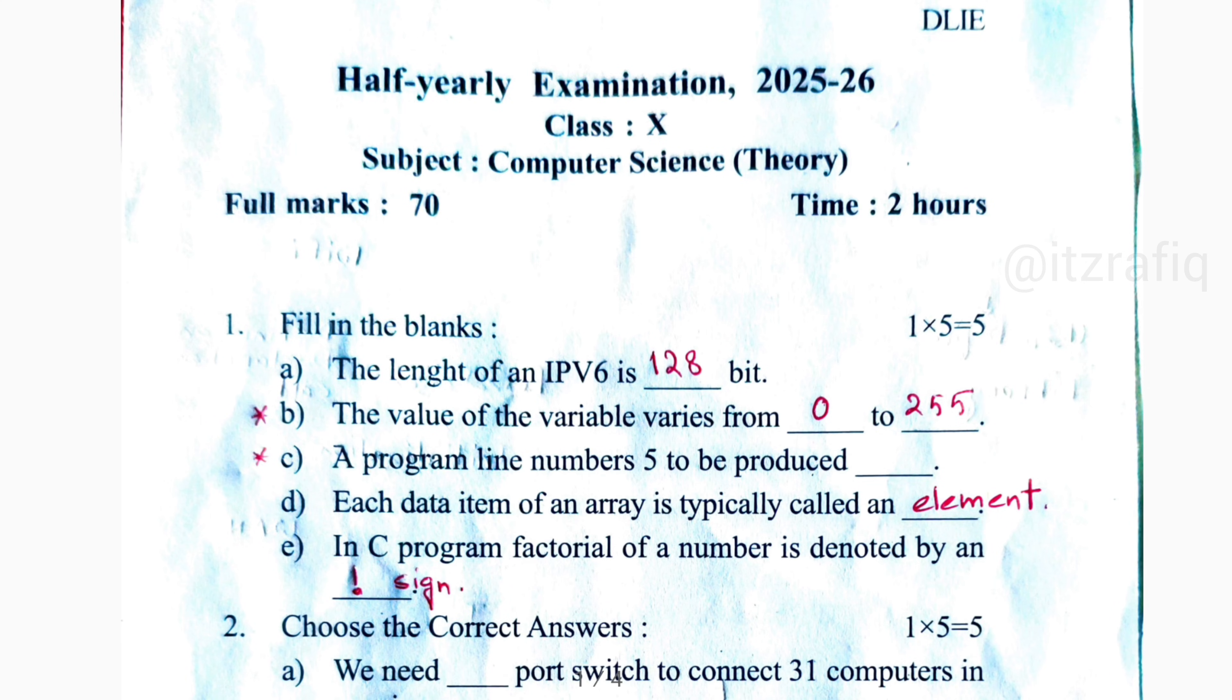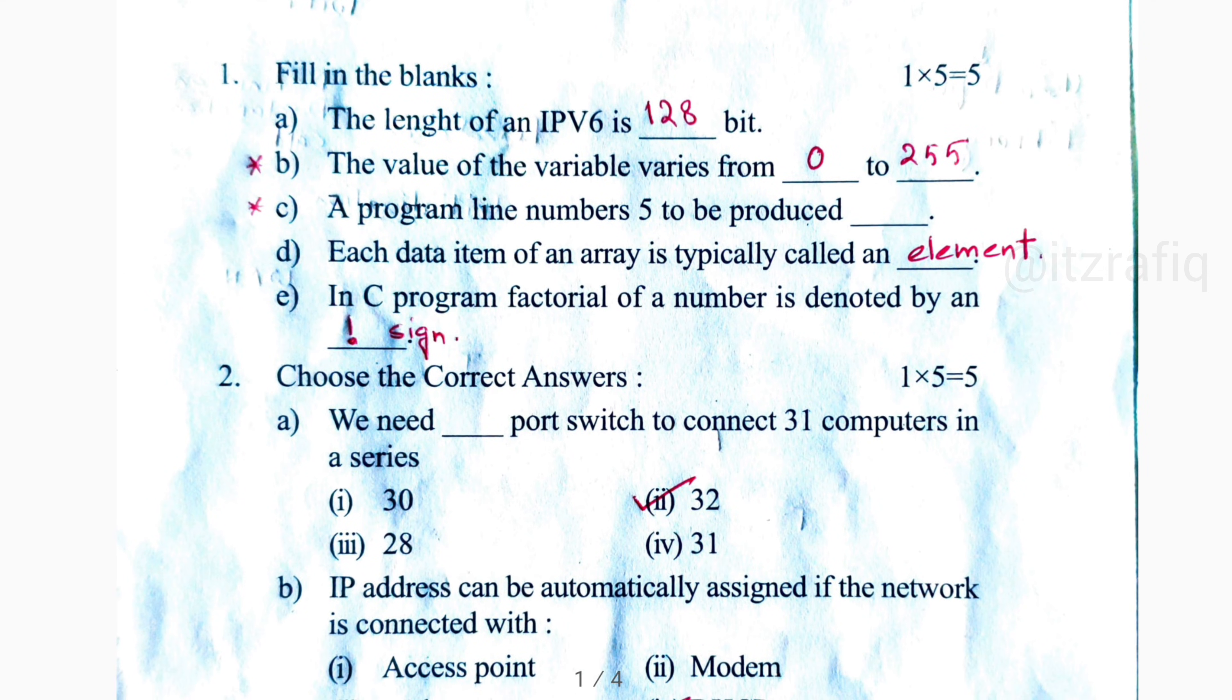The length of IPv6 is 128 bit. Second question, the value of variable varies from - the answer, if it is related to IP, should be 0 to 255, but the question is not clear so it may be something else also.